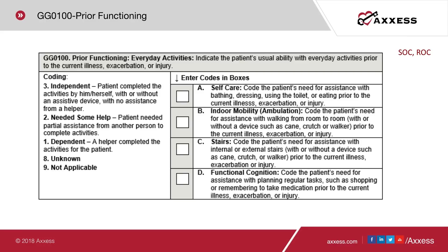GG0100, prior functioning, is collected at start of care and resumption of care. This item identifies the patient's usual abilities with everyday activities prior to their current illness, exacerbation, or injury. As we go through all of these GG questions, it's basically always related to their current illness, exacerbation, or injury. You may review the clinical record and also interview the patient or their representative.